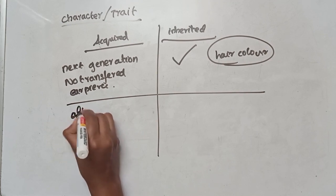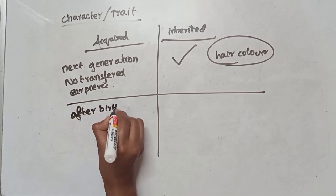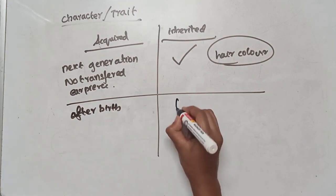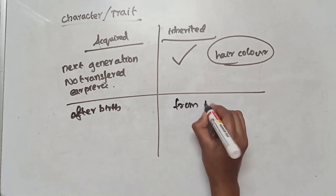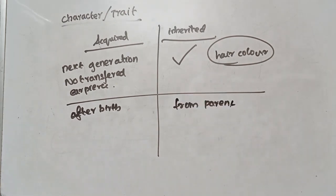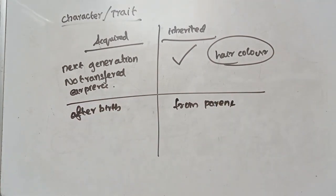So to summarize: acquired characters are acquired after birth. Inherited characters are those that are passed on from parents naturally.